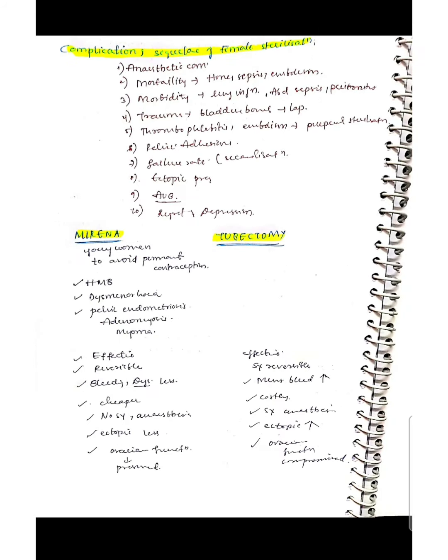Advantages include no scar and it can be done under local anesthesia. Overall complications and sequelae of female sterilization include anesthesia complications, mortality from hemorrhage, sepsis, and embolism. Morbidity includes lung infection, abdominal sepsis, peritonitis, trauma to the bladder and bowel from laparoscopy, thrombophlebitis, embolism in puerperal sterilization, pelvic adhesions, failure rate, ectopic pregnancy, abnormal uterine bleeding (etiology unknown), and regret and depression in the mother.